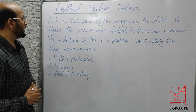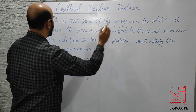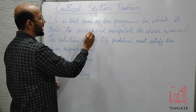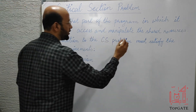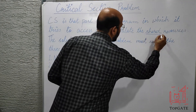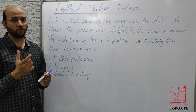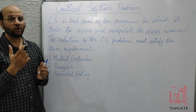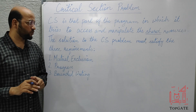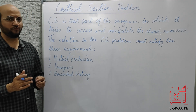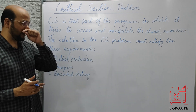So let's start the lecture. The critical section is that part of the program in which it tries to access and manipulate the shared resources. The most important word in this definition is 'shared resources.' It is that segment of the code in which the process or the program is accessing and manipulating the shared resources. I will explain this with a basic general example and also with a technical example.